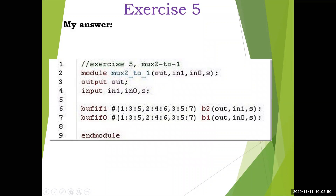So the output changes according to minimum, typical, and maximum delays. The fall delay is shown here and the rise delay here. For example: 1, 3, then 4 plus 5 equals 9. With respect to these delays, the output changes accordingly — this is how Verilog handles min:typ:max delay specifications in simulation output.